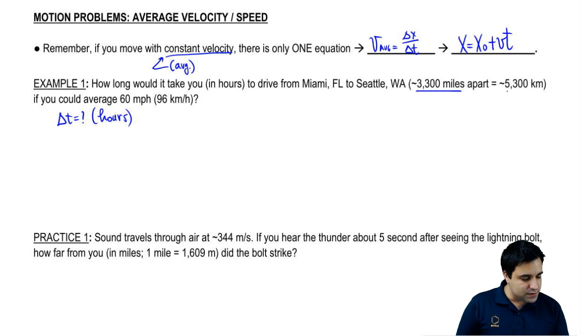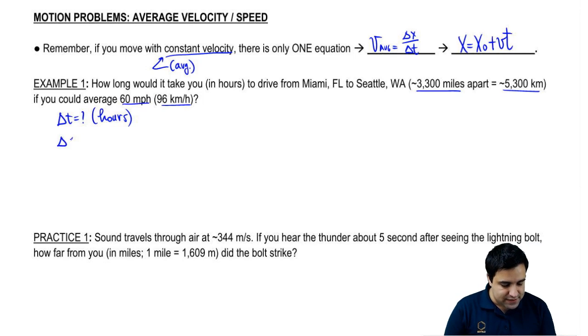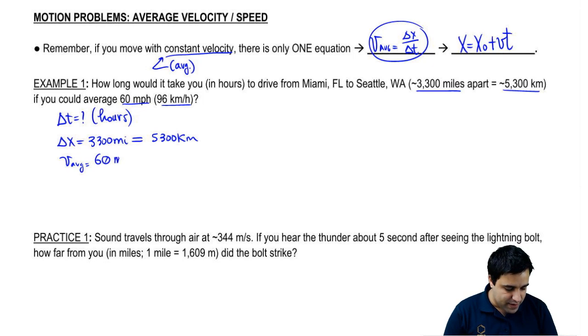And this is the distance. If you could average this velocity. So I'm saying that your delta x is 3300 miles or you could use 5300 kilometers. And your speed, your average velocity is 60 miles per hour or that's the same thing as 96 kilometers per hour.